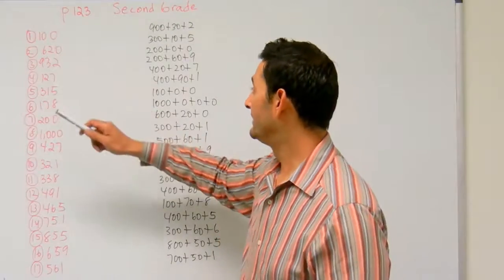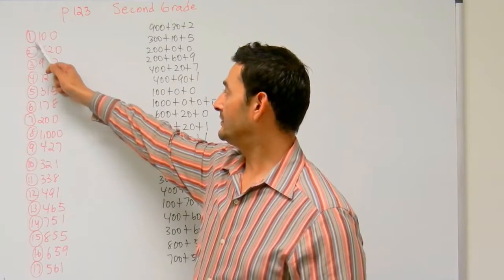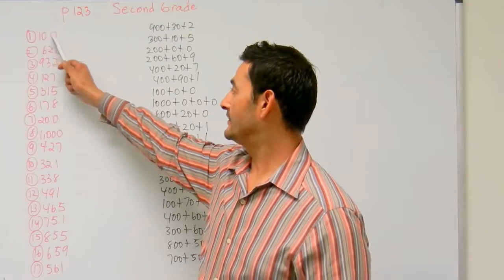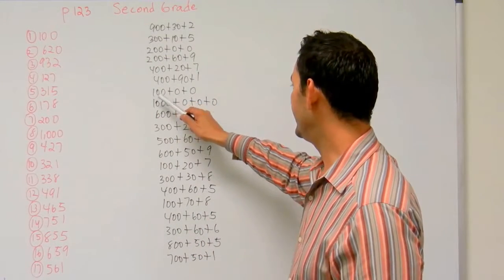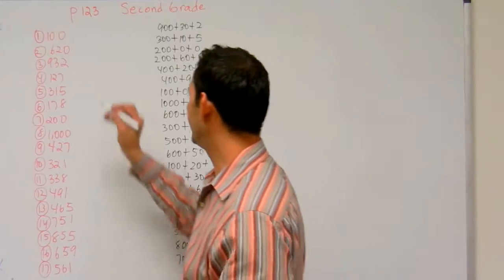So here I have the number 100. So I've got 1 in the hundreds place, 0 in the tens place, and 0 in the ones place. Let's see, where is that? 100, 0, 0, that's it right there.